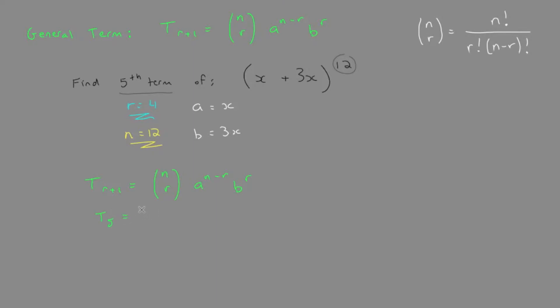t5, equals 12 choose 4, x to the power of n minus r, b, which is 3x, to the power of 4.